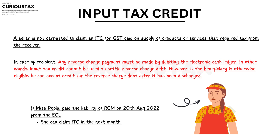The recipient will pay the reverse charge tax from the electronic cash ledger, and then in the next month, they can claim ITC on that payment.